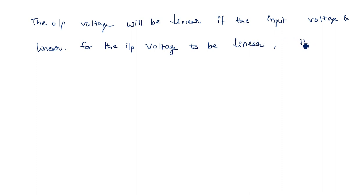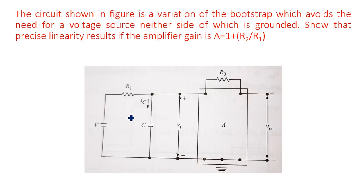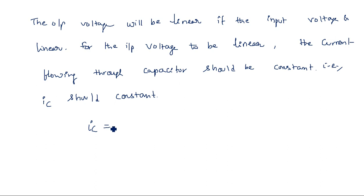So the current flowing through the capacitor, Ic, should be constant. Let us apply the KVL equation at the input side. We can write that Ic is the current leaving this node.